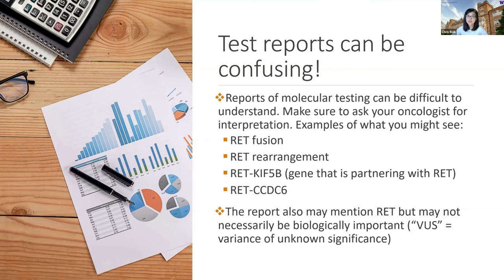But some reports don't say either of these words and they just have a second gene next to RET, so it's not very straightforward. To make things even more confusing, some reports may mention the word RET, but that may not be important because there are things called VUS, which is short for variants of unknown significance. These are abnormalities that happen in the gene RET, but not necessarily important biologically. So I mention this because this is something that you may see on your own reports.